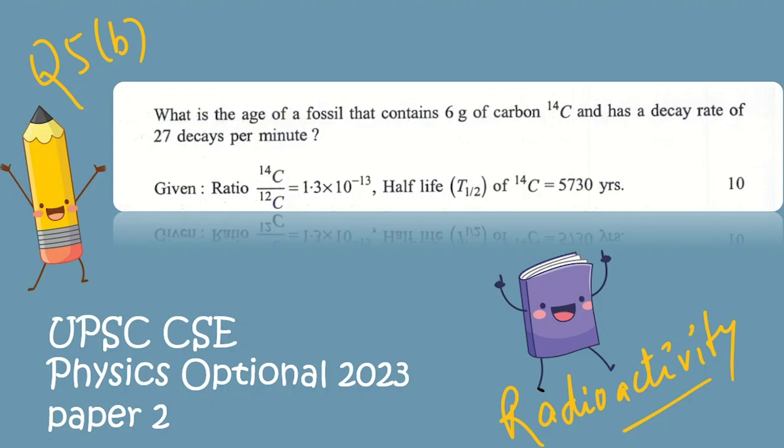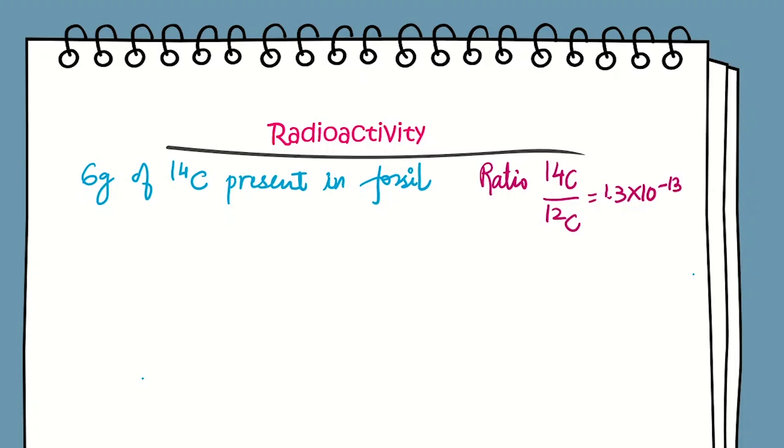Let's start the numerical. The fossil contains 6 grams of 14C carbon. We know that one mole of carbon contains 12 grams of carbon, which is equal to 6.02 × 10^23, the Avogadro's number. So 12 grams of carbon contains this many nuclei.